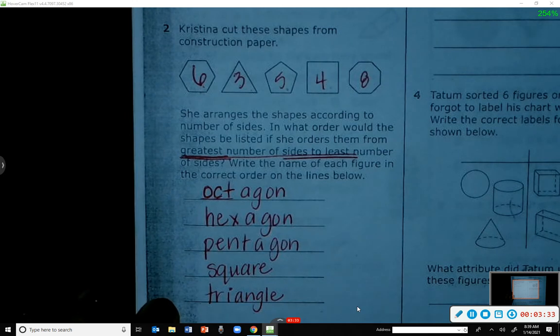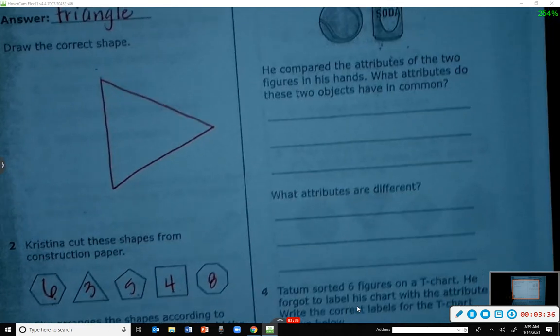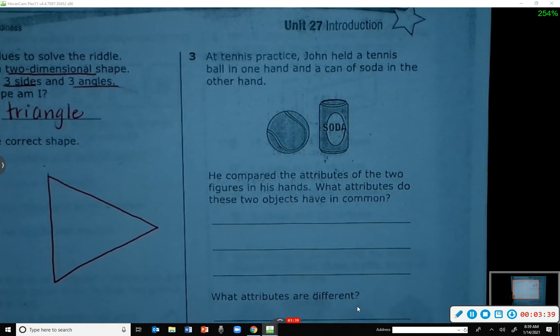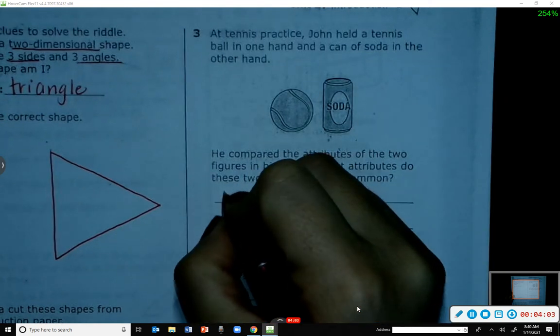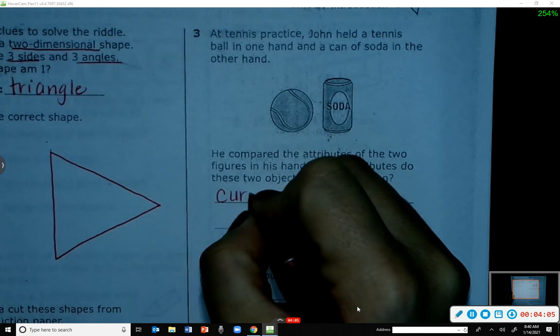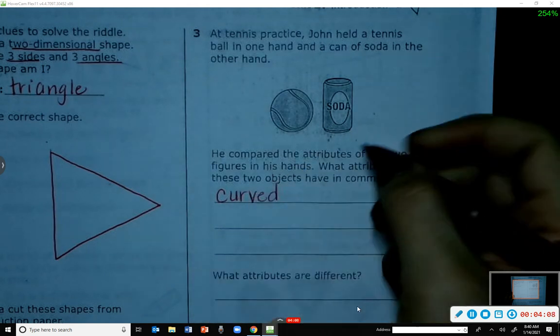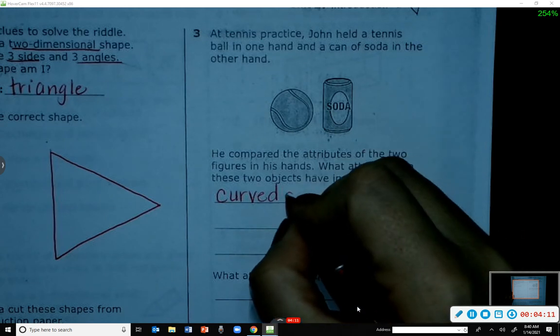That's kind of just a review of what you've learned in second grade. At tennis practice, John held a tennis ball in one hand and a can of soda in the other hand. He compared the attributes of the two figures in his hands. What attributes do these two objects have in common? Y'all think of an attribute they have in common?